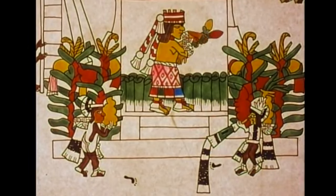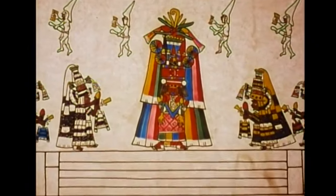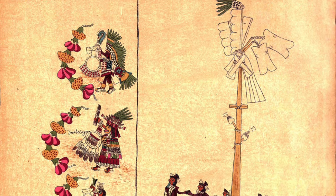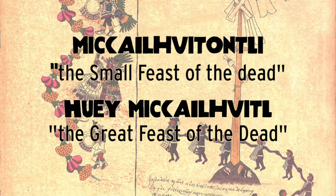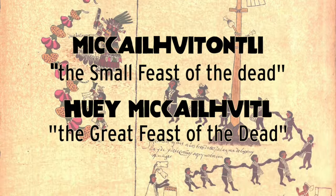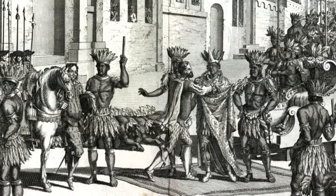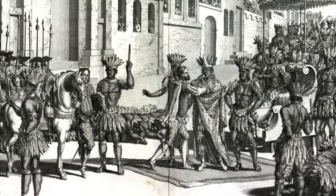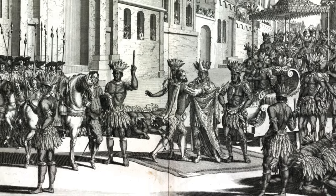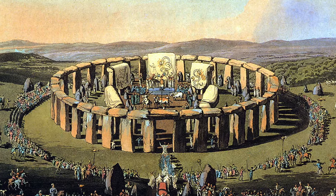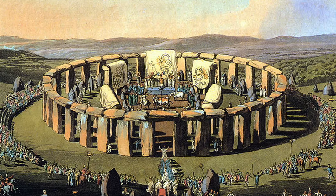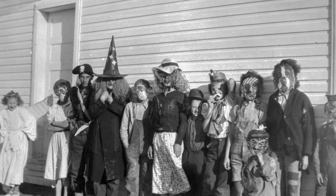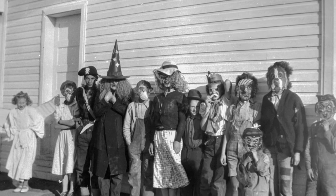While many Día de Muertos traditions can be traced back to ancient Mesoamerican origins, this does not include the date of the festival. The Aztecs venerated the dead during two festivals — the Small Feast of the Dead and the Great Feast of the Dead — which spanned from July 24th to September 1st. However, after Mexico was colonized, there was an attempt to adapt these festivals into the Christian celebrations of All Saints Day and All Souls Day, which ironically have their origins in other pagan festivals, like the ancient Roman Lemuria and the Celtic Samhain. All Saints' Eve, or All Hallows' Eve, eventually became known as Halloween.